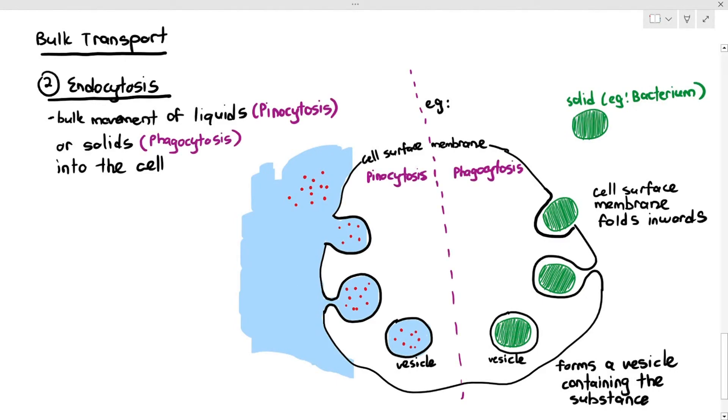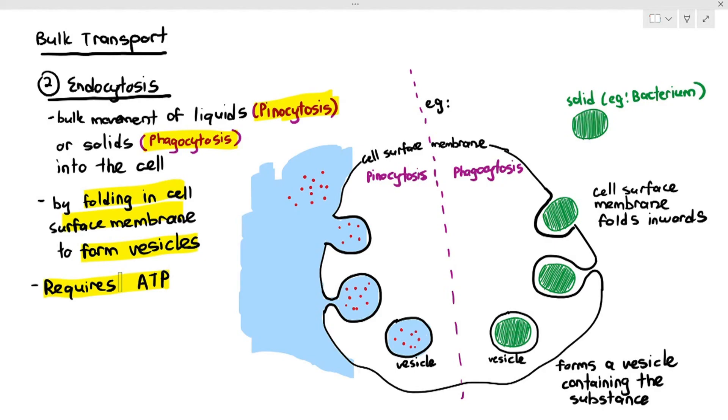Endocytosis is further divided into two, which is phagocytosis and pinocytosis. And phagocytosis is just a way of saying it is cell eating, where it is taking in a solid substance, or if it's pinocytosis, then it's the bulk movement of liquids into the cell. But whether it's pinocytosis or phagocytosis, both of them involve the folding in of the cell surface membrane to form vesicles, and it's also very important to know that it requires ATP. So this is all we have to know about bulk transport. Thank you.